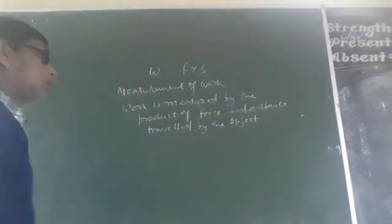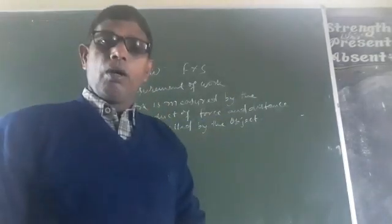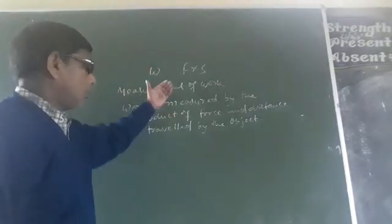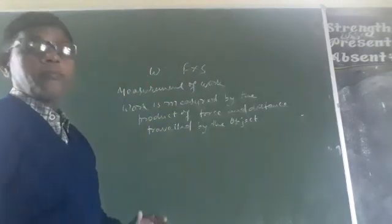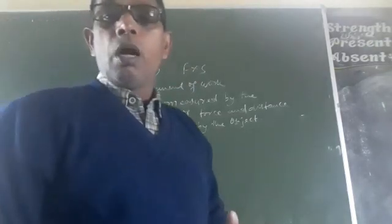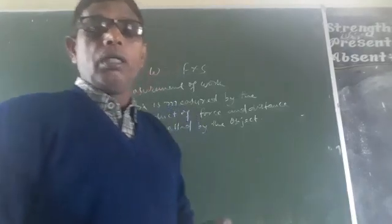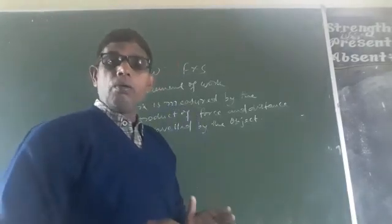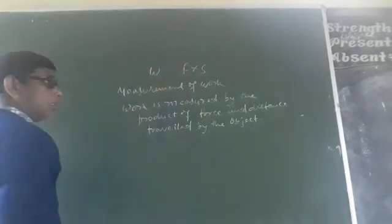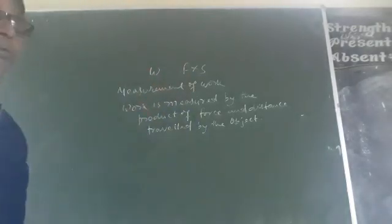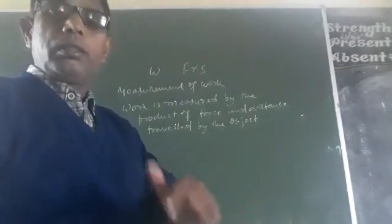This means if a force F is applied on an object and the object goes through a distance of S, that is known as measurement of work. This will help us understand how much work is done by the force applied on any object. So, measurement of work is done by the product of force and distance travelled by the object due to that force.